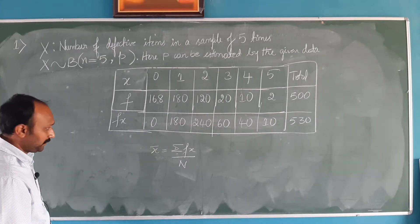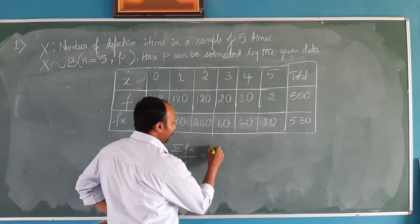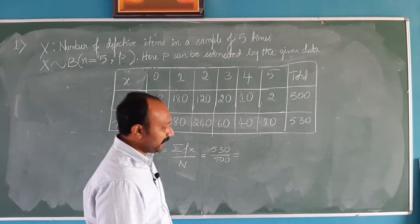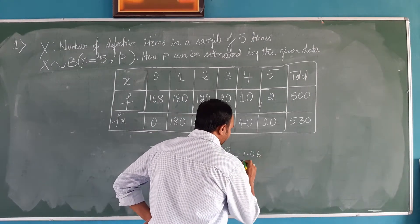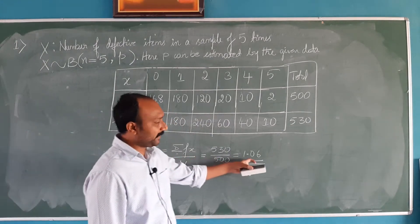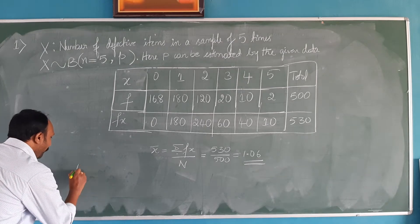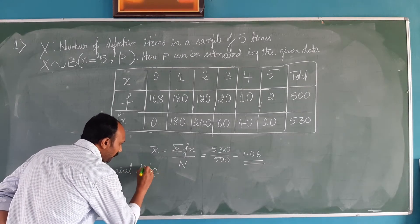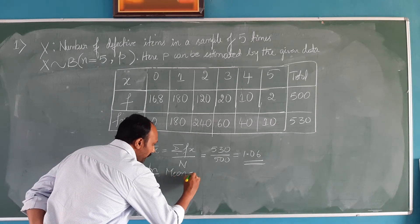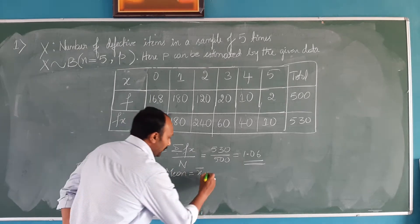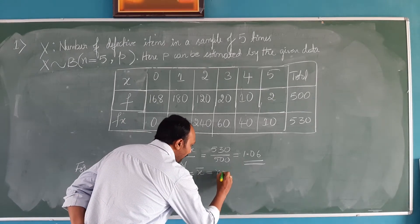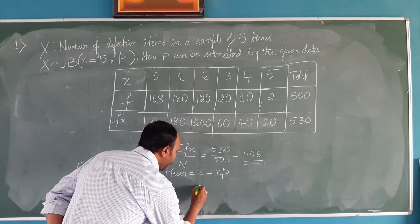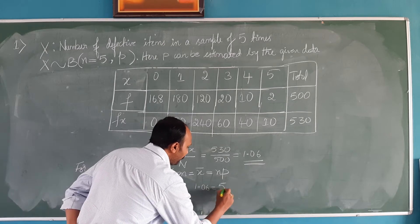Now let us find the mean: x-bar is equivalent to summation fx by N, that is 530 by 500, which gives the value 1.06. So what is x-bar? x-bar is 1.06. For binomial distribution, mean can be termed as x-bar. What is the mean according to binomial distribution? Mean is NP. So x-bar is 1.06, and n value is 5.